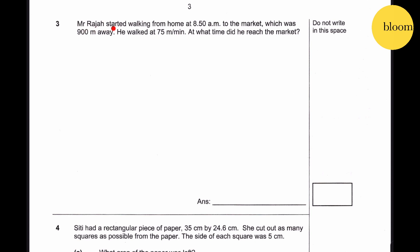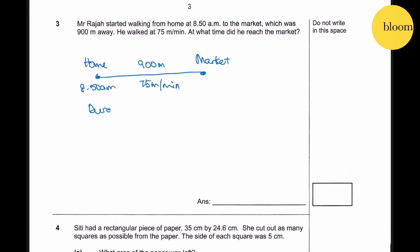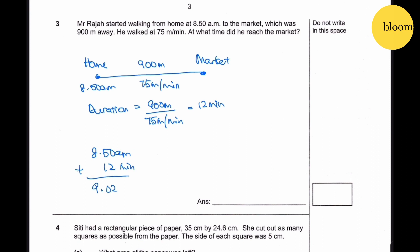Question 3: Mr Rajah started walking from home at 8:50 a.m. to the market, which was 900 metres away. He walked at 75 metres per minute. Duration of his walk is 900 ÷ 75 = 12 minutes. So 8:50 a.m. plus 12 minutes gives us 9:02 a.m.